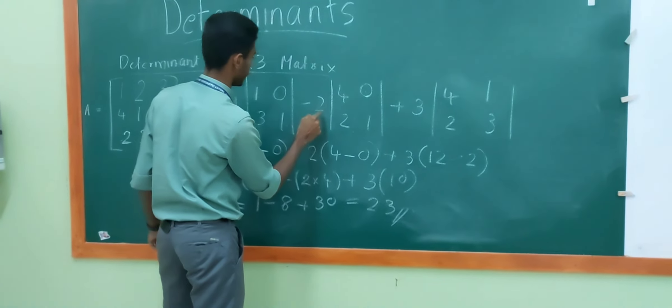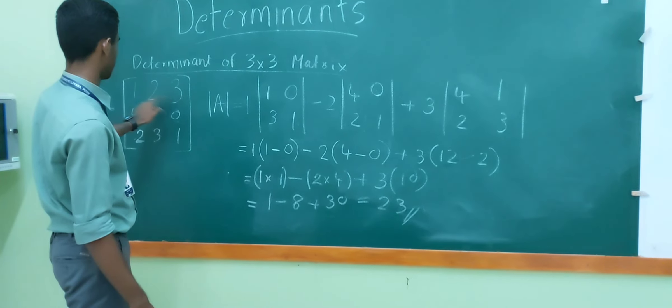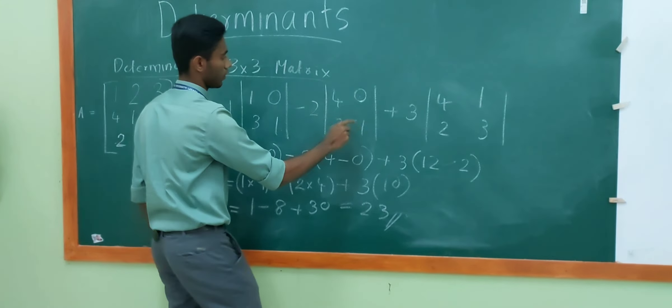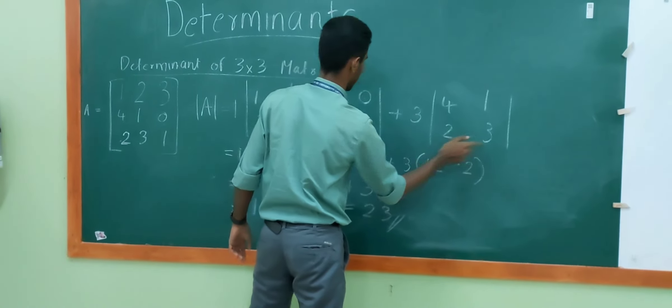Then, subtract from the second element multiplied by the excluding elements that come in the row of the second element. That is 4, 0, 2, 1. Then, add it to the third element and excluding numbers. That is 4, 1, 2, 3.